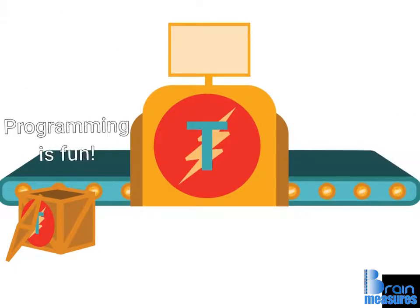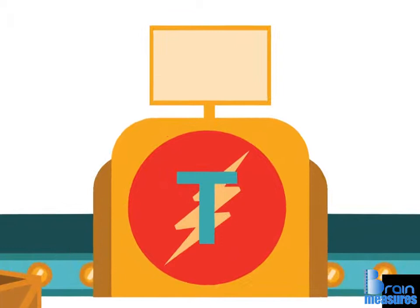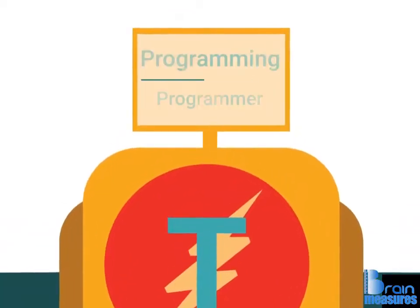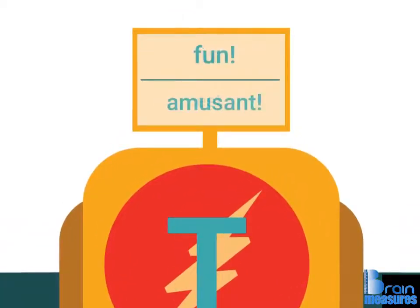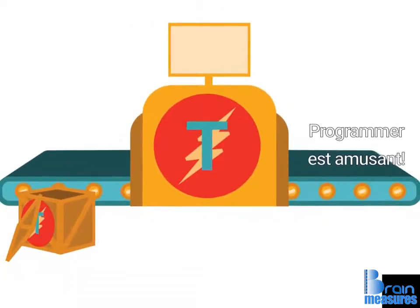We'll start with a simple sentence: "Programming is fun!" The code we'll write for this task allows the program to translate one word at a time. It'll be automatically executed for each word in the sentence.